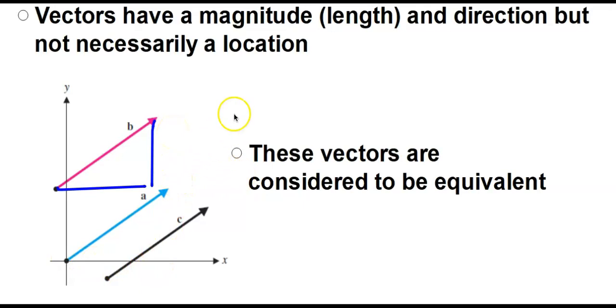Vectors definitely have a magnitude and a direction, but they don't necessarily have a fixed location. If vectors have the same magnitude and direction, those vectors are actually equivalent to one another.